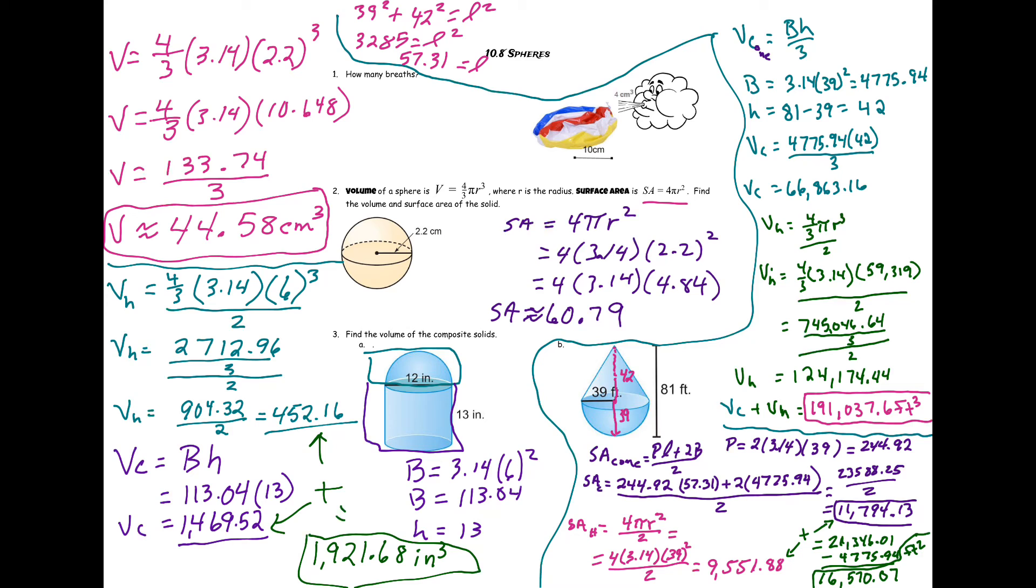Does a sphere have a base? No. So I didn't have to subtract off a base of a hemisphere because there isn't one in a sphere, whereas with a cone there is one. So I did have to subtract off the area of the base right here. So I did that minus 4,775.94 for a grand total of 16,570.07 feet squared.